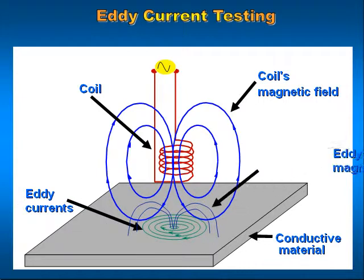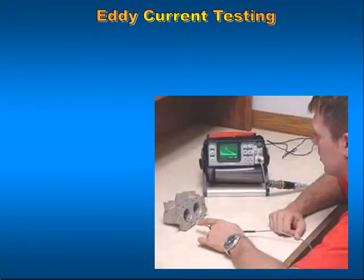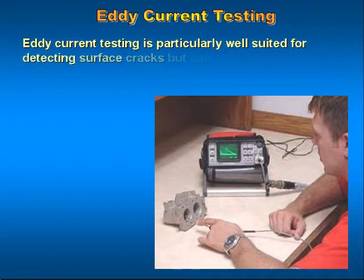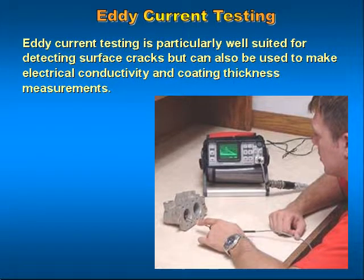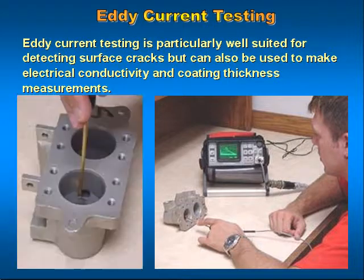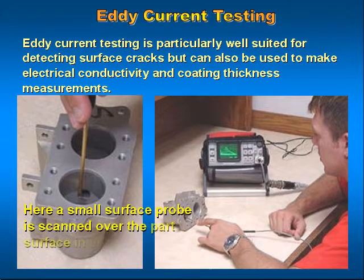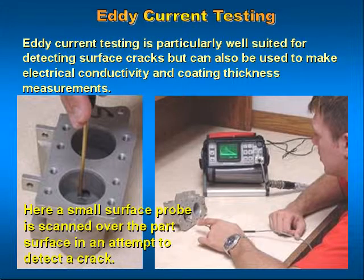This field produces an eddy current magnetic field, which in turn creates an eddy current field on the surface of the part. Eddy current testing is particularly well suited for detecting surface cracks, but can also be used to make electrical conductivity and coating thickness measurements. Here, a small surface probe is scanned over the part in an attempt to detect a crack.